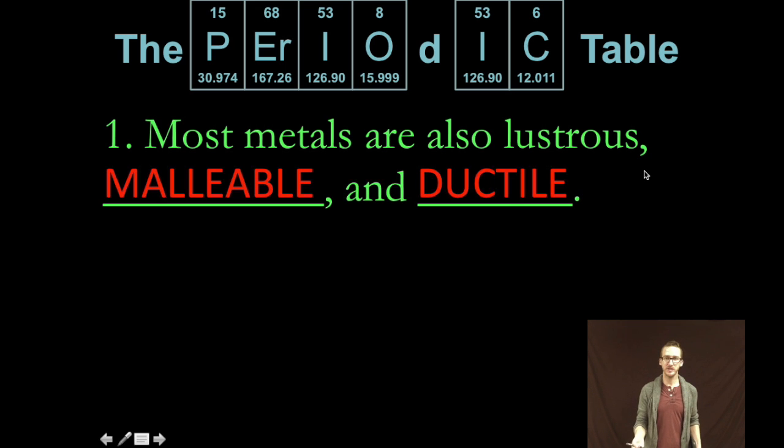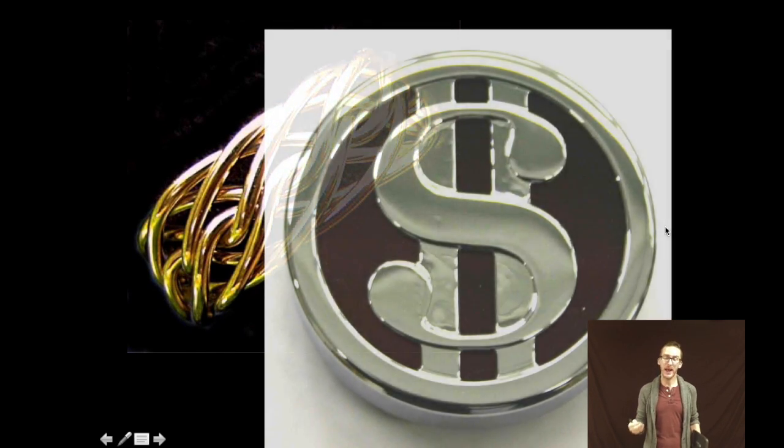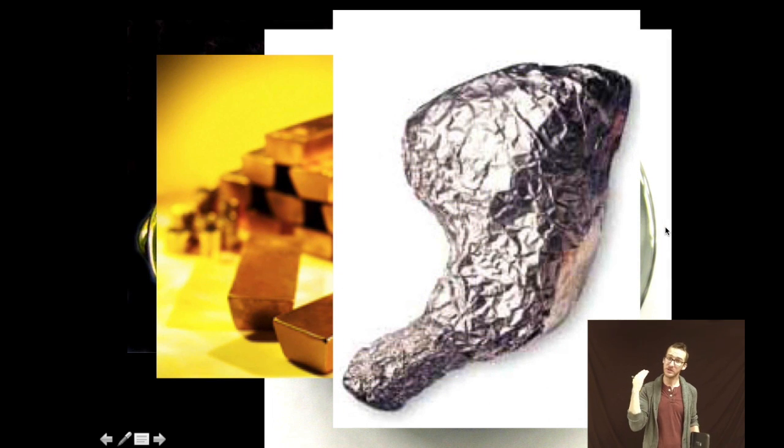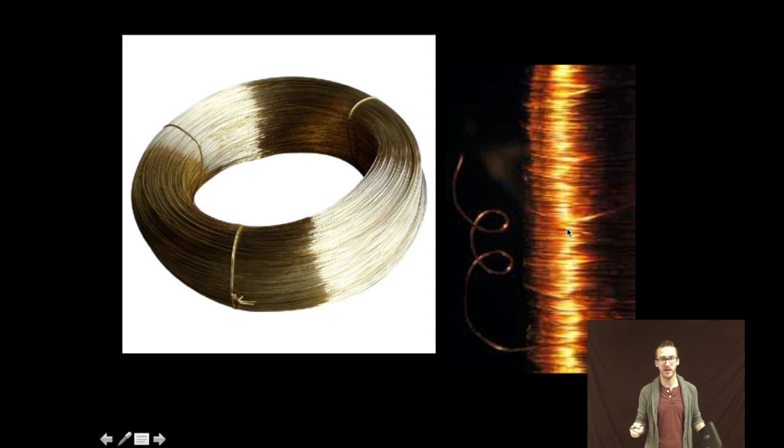Important to note that most metal elements are also lustrous or shiny. Shine bright like a diamond. They are malleable and ductile. When we talk malleable think bling. We are able to hammer metals into thin sheets. I like to think of typically the only metal that I can afford aluminum foil. Malleable. Ductility on the other hand is the ability to be stretched into a fine wire. So a couple of important vocabulary words as you think about describing metals.